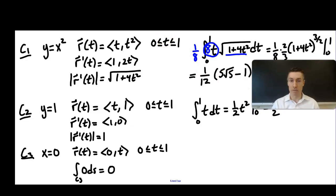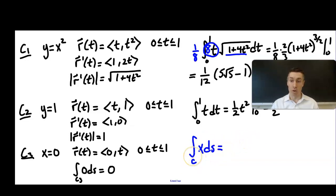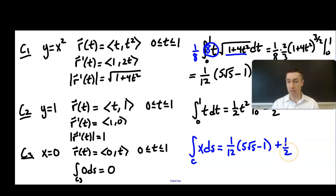The total integral of x ds over the whole curve C is (1/12)(5√5 - 1) + 1/2 + 0. We can distribute and combine like terms, and that is the value of this line integral.